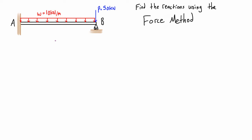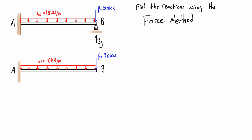Moving forward with this one-degree statically indeterminate problem, we have to pick one of the reactions to define as the redundant reaction — this is what we separate out when applying the principle of superposition. For a cantilever beam with an extra support, it is often easiest to call that extra reaction the redundant. So we remove BY from the beam, leaving only the applied loads. With BY removed, the system becomes statically determinate with just three unknown reactions at A.